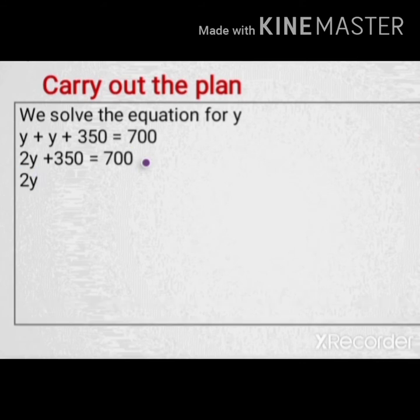So to make the equation balanced, we carry the 350 from the left side to the right side and apply the inverse operation. So 2Y equals 700.